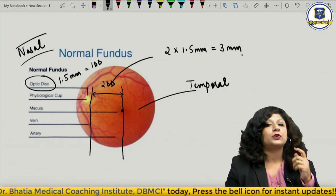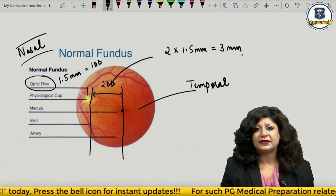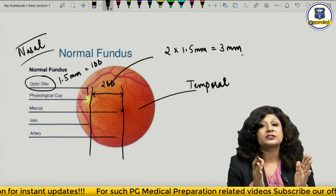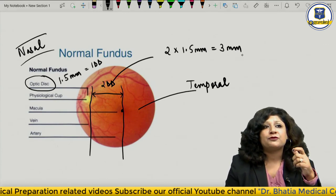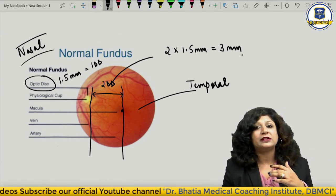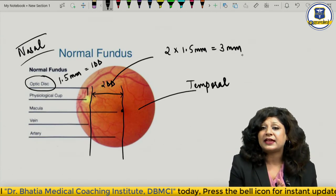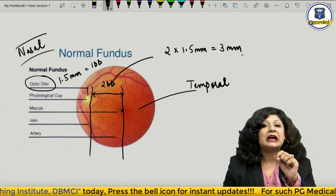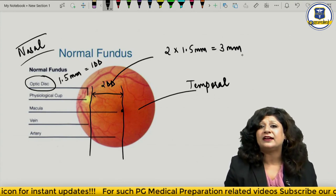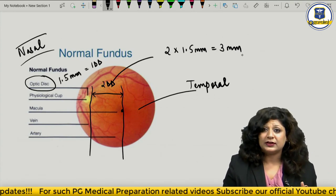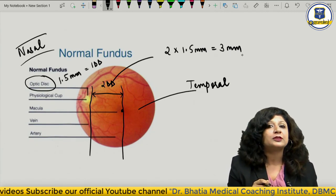This is a very important correlation because whenever you are doing direct ophthalmoscopy, where you concentrate on the central retina — if you are seeing the optic disc and want to go to the macular area, you move 3 mm temporally. Similarly, if you are seeing the macular area and want to go to the optic disc, come 3 mm nasally. This is especially important for pathologies where the actual structure of the macula may be hidden.